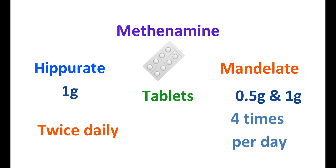In summary, methenamine is a urinary antibacterial agent used to treat urinary tract infections. It is split into formaldehyde and ammonia, where formaldehyde acts as a non-specific antibacterial agent inhibiting both gram-positive and gram-negative bacterial infections in the urine. However, bacterial species like Pseudomonas are not treated by methenamine because they produce alkaline urine. Acidification of urine is essential for effective action. Dysuria, abdominal discomfort, nausea, and rashes are the important side effects. Methenamine should not be given with sulfonamides due to formation of crystalluria.